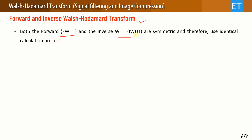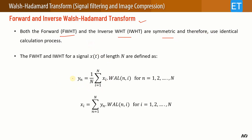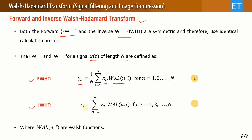Both the forward and inverse transforms are symmetric transforms, therefore they use an identical calculation process. For a signal x(t) of length N, you can find the Walsh-Hadamard transform coefficients y(n) using the equation: one over N, times the sum over i from 1 to N of the signal samples multiplied by the Walsh functions. The inverse transform uses the same structure. Walsh functions W(n,i) are discrete square waves having plus one and minus one values.